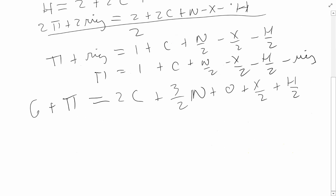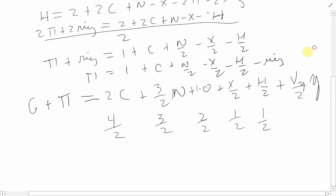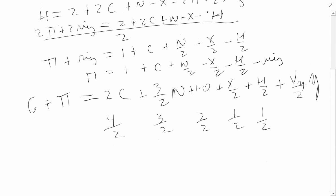We want to find a simplification and understand where these coefficients come from. Writing down the normal valencies: carbon is 4, nitrogen is 3, oxygen is 2, halogens and hydrogen are 1. The coefficient of each element is simply its valency divided by two: carbon gives 4/2 = 2, nitrogen gives 3/2, oxygen gives 2/2 = 1, and halogens/hydrogen give 1/2. So each element's contribution to total bonds is its valency divided by two, times its count.